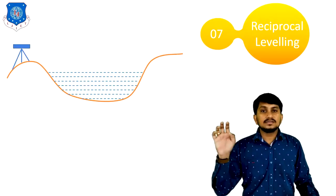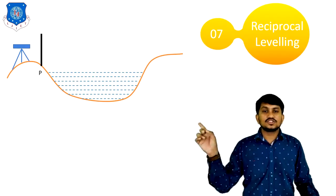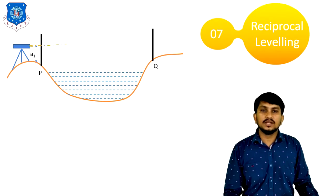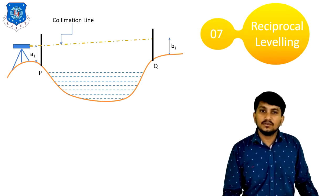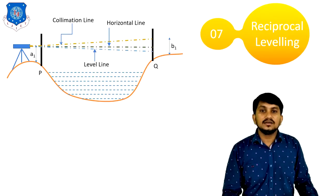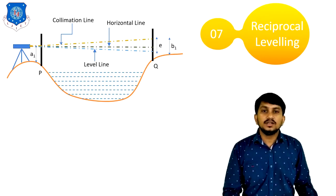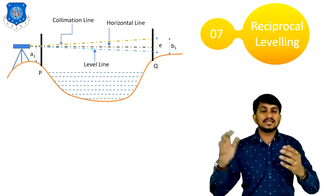First, we do our setup at one bank and take the reading at station P, called A1. After taking the reading at P, we take the reading at Q, which is B1. But this reading has an error because of the curvature of the earth — the collimation line differs from the actual horizontal line and level line. Because of this error, we cannot calculate the actual level difference simply by B1 minus A1.